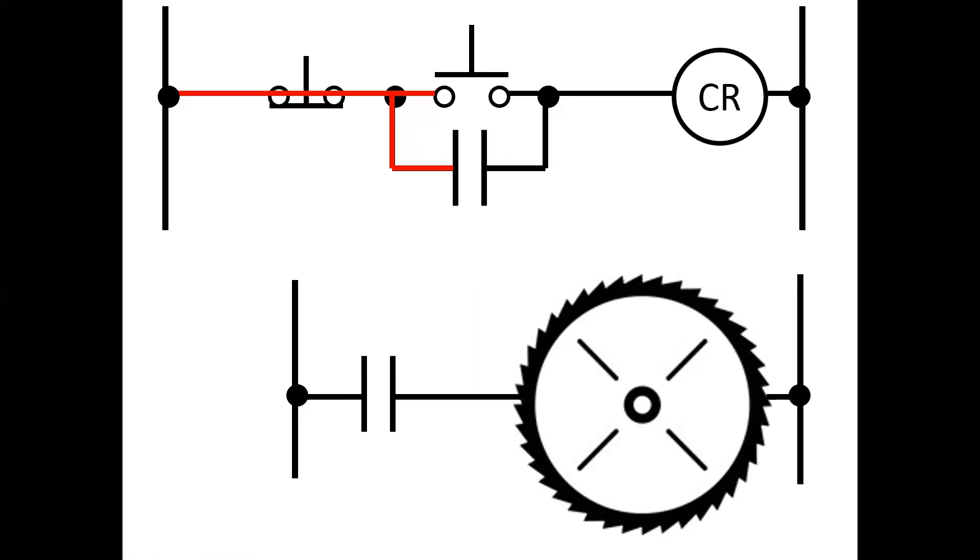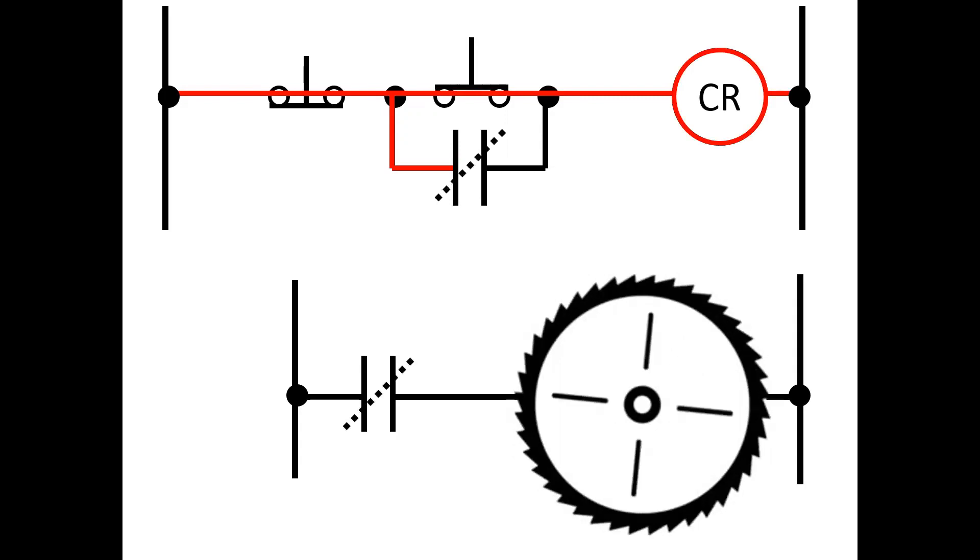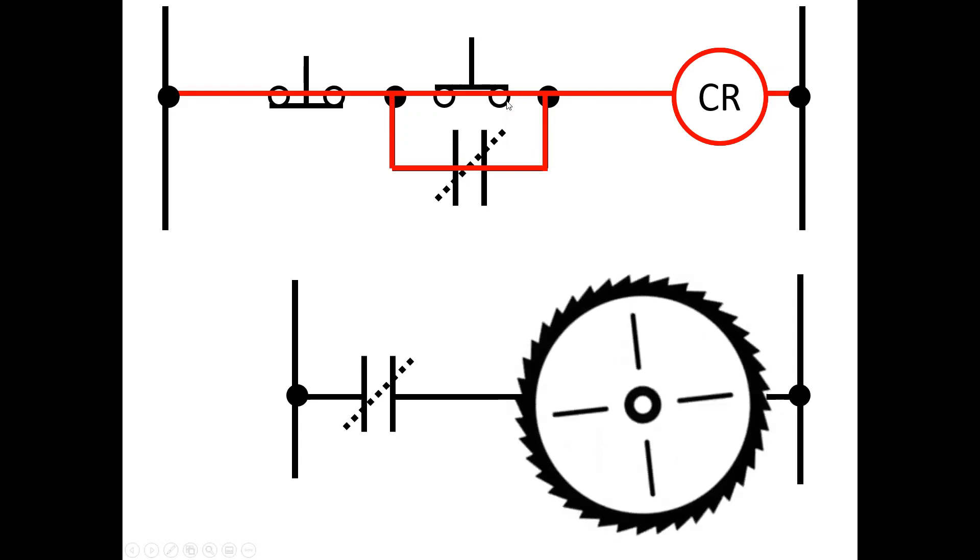So let's see what happens. The first thing is we close the push button for start and it energizes the coil, at which time the coil changes the state of all contacts. Notice what now happens. We have a parallel path for current to flow. It is now flowing both through the closed contact and through the push button.